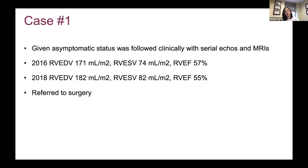Given his asymptomatic status, he was followed clinically with serial echoes and cardiac MRI. In 2016, his RV volumes were enlarged — about 171 milliliters per meter square, which is much larger than the upper cutoff of about 90-100 milliliters per meter square depending on gender and age. The RV end-systolic volumes were also large. The RVEF was 57%, but I caution you that similar to mitral regurgitation, an RVEF of 57% is probably not normal in someone with severe tricuspid regurgitation due to the offloading of the right ventricle.